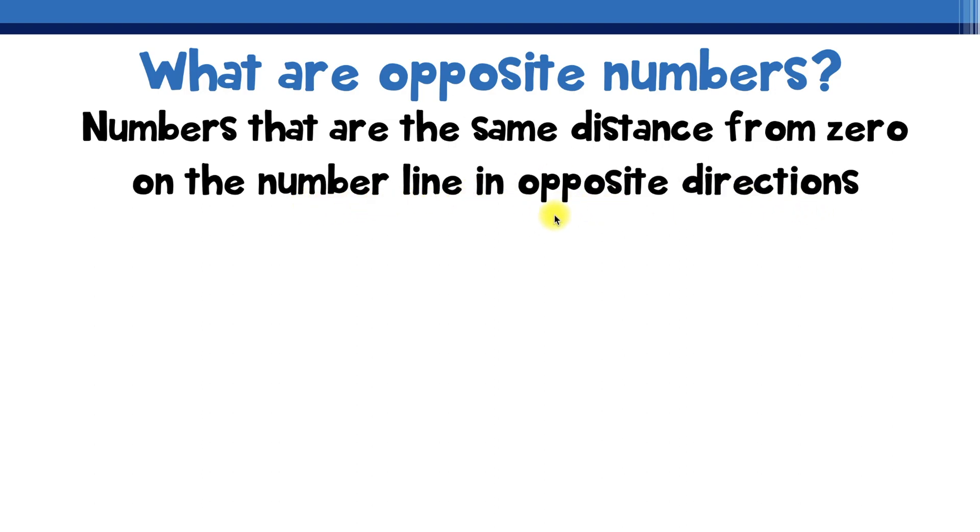In this wordy definition there are three things that we're really going to have to make sure that we focus on. First is the number zero. It's incredibly important when we're talking about opposite numbers. Zero is really where we begin because it's from zero that we're looking for numbers that are the same distance but in opposite directions.